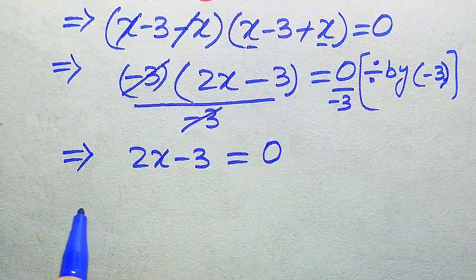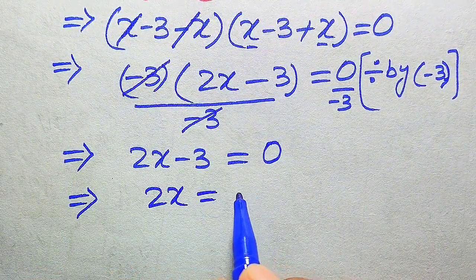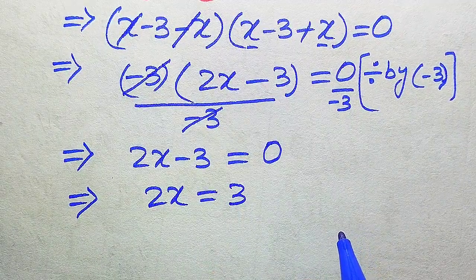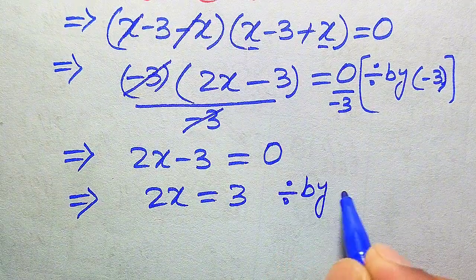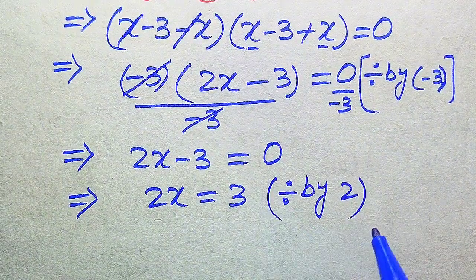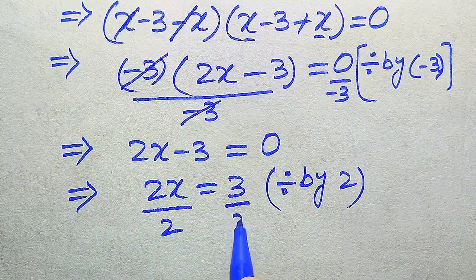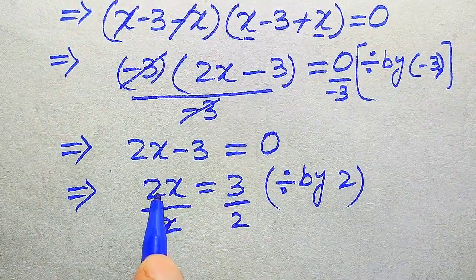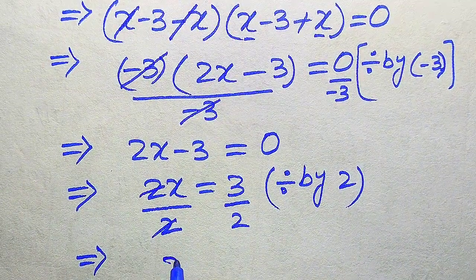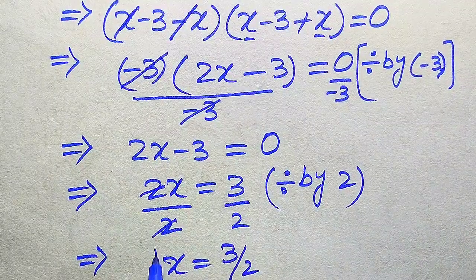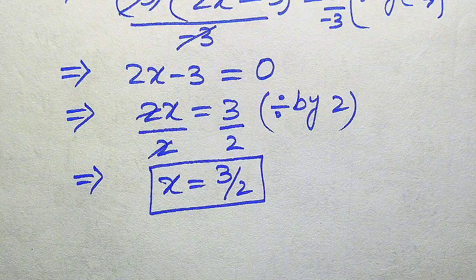Now we find the value of x. We move minus 3 to the right hand side, giving 2x equals 3. Then we divide both sides by 2: 2x divided by 2 equals 3 divided by 2. The two's cancel, and we get x equals 3 over 2.